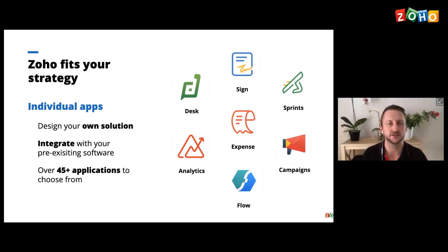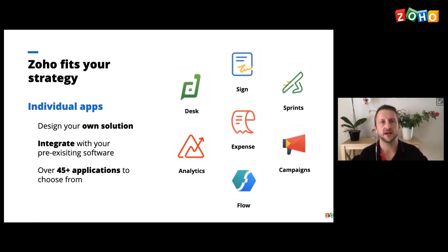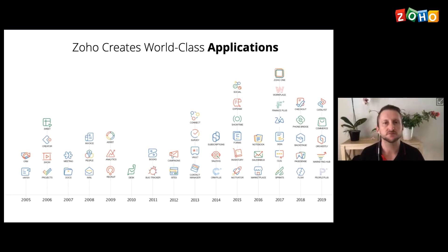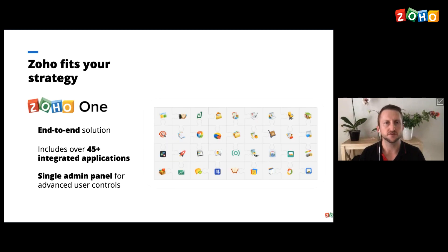Zoho has many different applications — more than 45 — and they integrate with your pre-existing software. But also bear in mind, Zoho probably has an app that is an alternative to your pre-existing software. We've created many different applications over the last few years, starting in 2005 with CRM all the way through to 2020. I believe it's about 10 new apps that we've brought out in 2020 — some of those have yet to be released — and we're definitely developing and improving all our products.